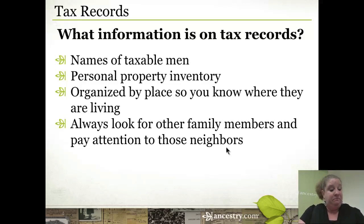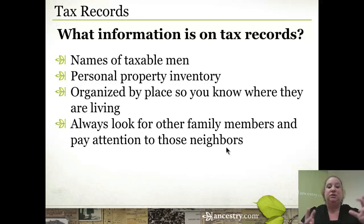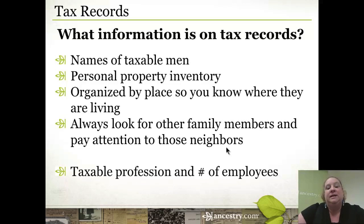Always look for other family members and pay attention to neighbors. Some tax lists are organized alphabetically and some are organized like a census by neighborhood — going in order of how the tax men walked their beat. If they're organized alphabetically, look for other people with the same surname right nearby. If organized by neighborhood, that gives you a good idea, just like a census, of who's living where and who might be connected. Very often those neighbors are going to be sons-in-law, brothers-in-law, or fathers-in-law — and different relationships start to emerge. Also, tax records include the taxable profession and number of employees, so you get a feel for their occupation and prominence in society.